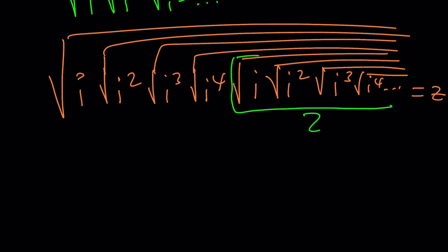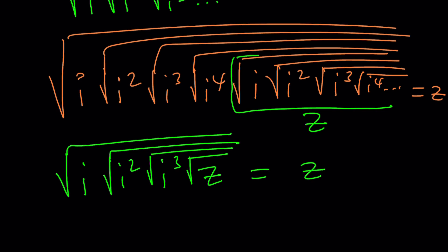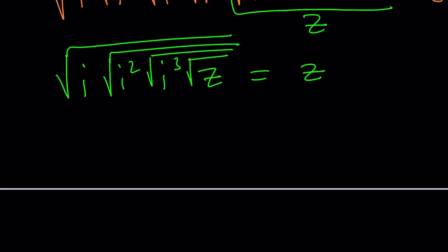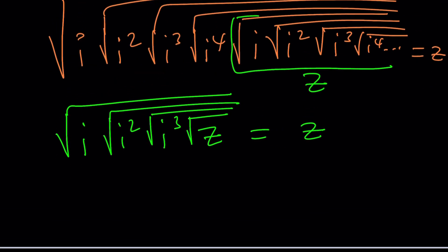Since our thing starts repeating here, this actually is the same as z. So it's the square root of i times i squared, then i cubed, then i to the fourth which is one. We can safely say this is z inside the radical. That whole thing equals z as well. This is nice because we can square both sides repeatedly until we get to a meaningful point.